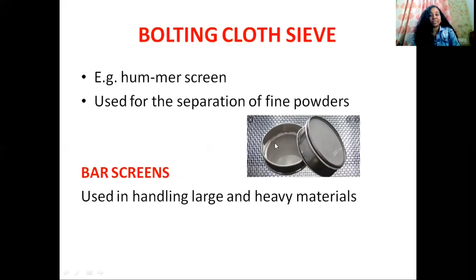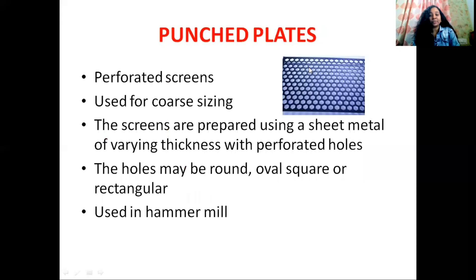Bolting cloth sieves are used for the separation of fine powders — for example, hammer screen. Bar screens are used to handle large and heavy materials. Next comes the punched plate sieves, also known as perforated screens. They are used for coarse sizing. The screens are prepared using a sheet metal of varying thickness with perforated holes. The holes may be round, oval, square, or rectangular.